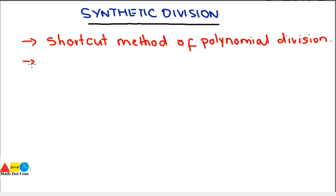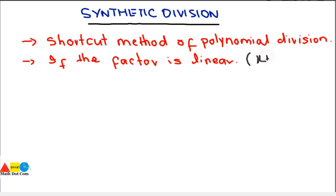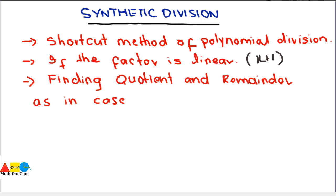This method is possible if the factor is linear, meaning the divisor should be linear where the power of x should be 1. For example, if the divisor is x plus 1, you can easily use synthetic division. Synthetic division is used for finding the quotient and the remainder, as in the case of long division.